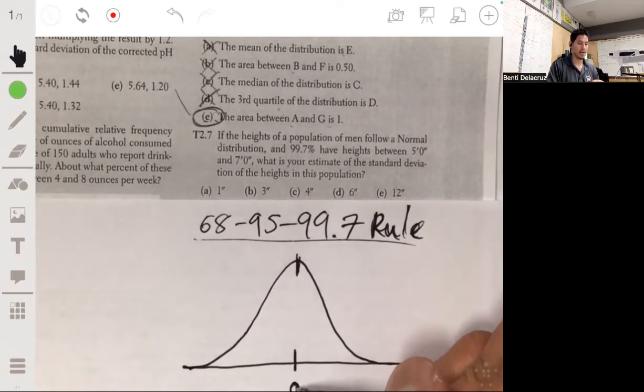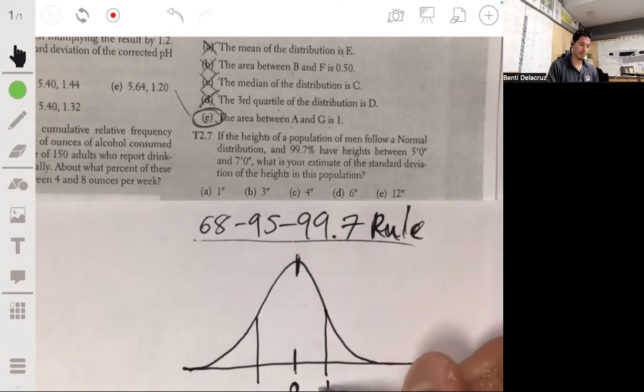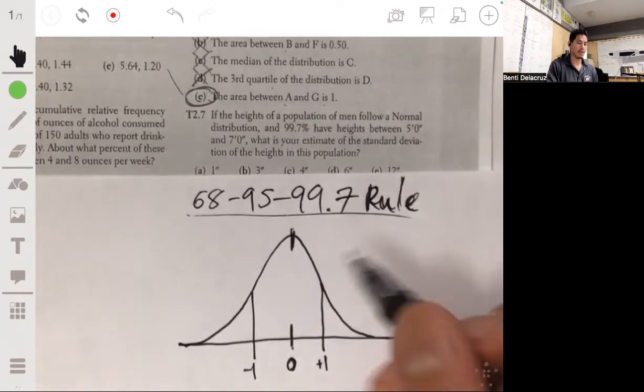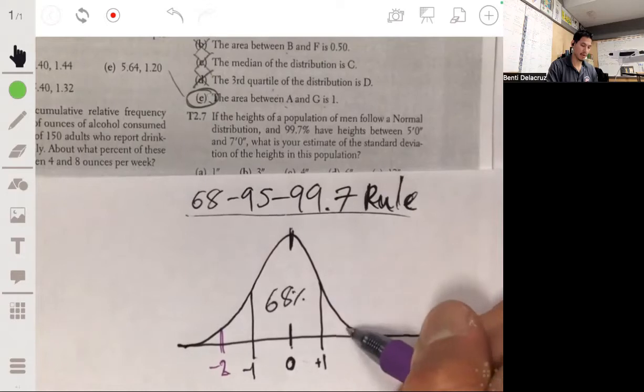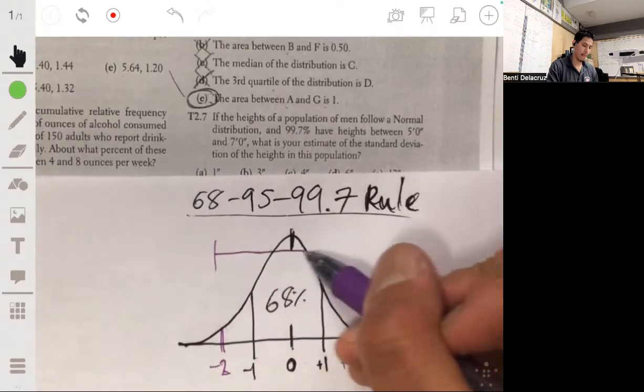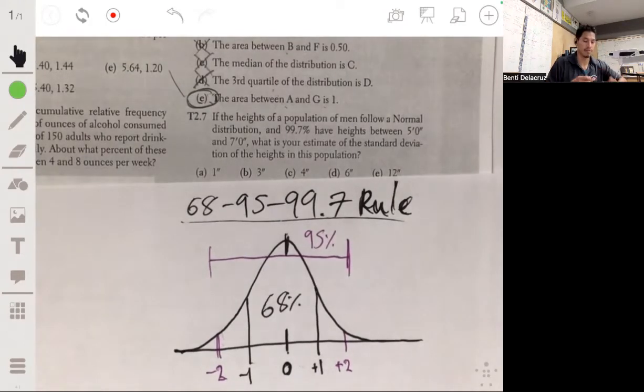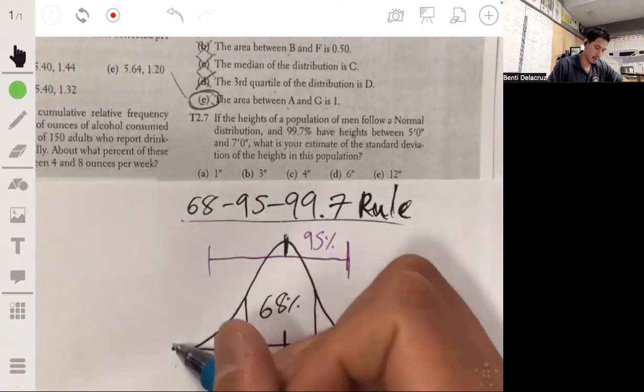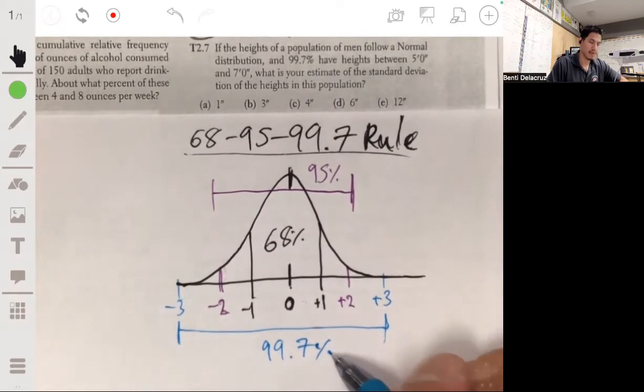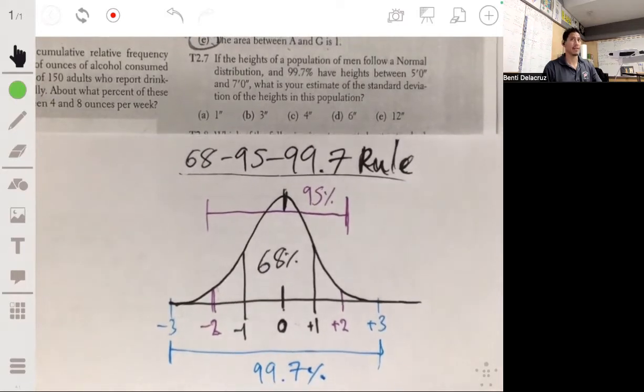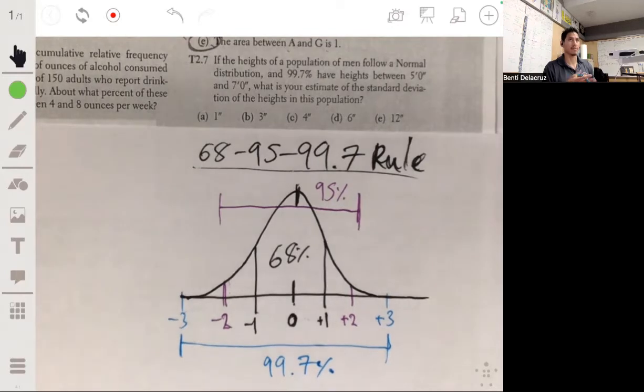Let's go over it. What this says is that a normal distribution will follow this rule where at the mean, that's zero standard deviations away. When we go one standard deviation away, negative one to the left and one to the right, 68% is between those two. When we go two standard deviations away, from here to here, it has to be 95% of the total area. And when you go three standard deviations away, you have that 99.7% of the total area. You definitely need to know this. This is a big deal.